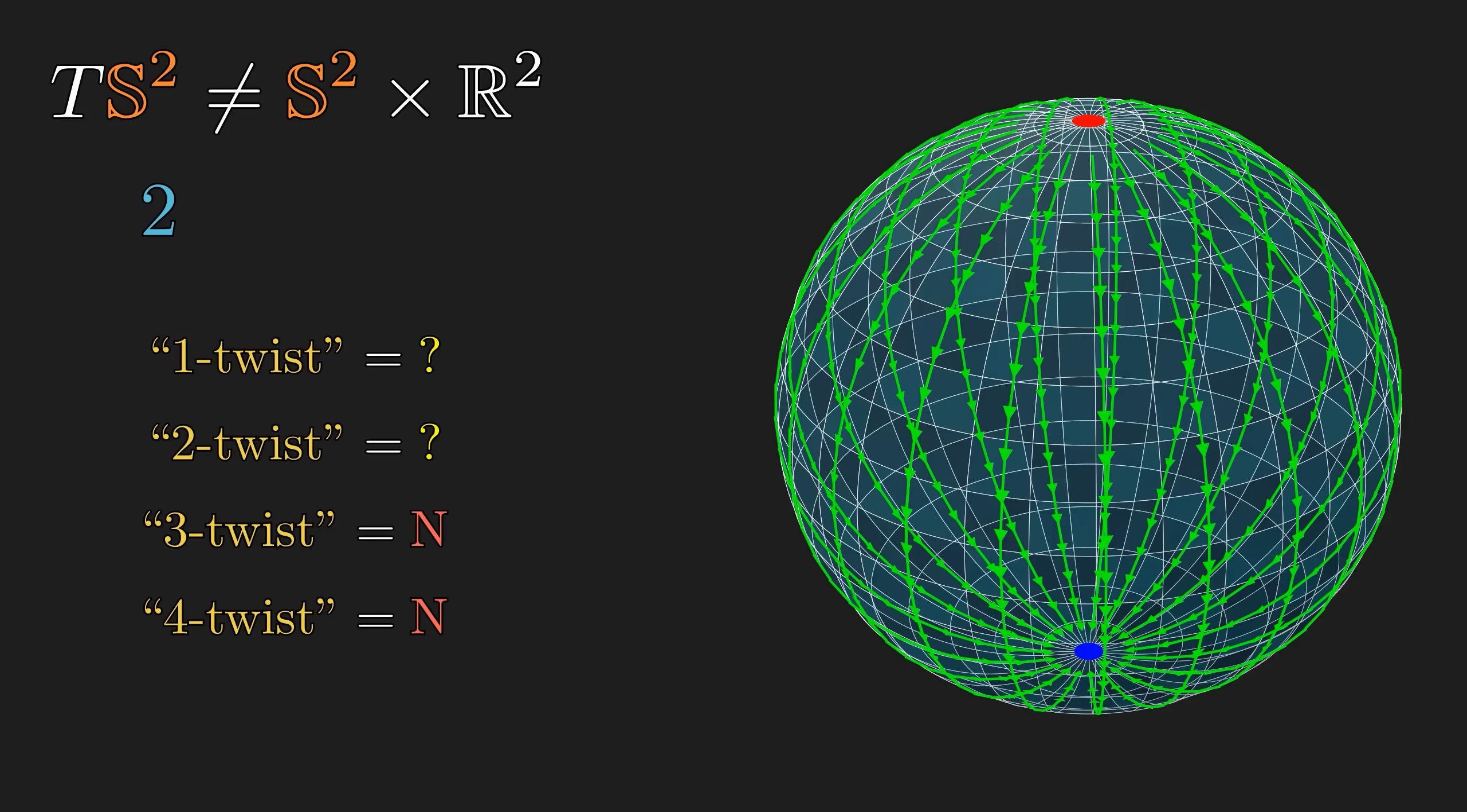If the tangent bundle of the sphere were trivial, it would have two independent, non-vanishing vector fields. But the Hairy Ball theorem tells us there is none, which means there is at least a second-level deficiency, and we will call that a second-degree twist. This only demonstrates the existence of degree two twists, but not the first.